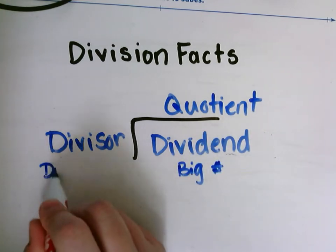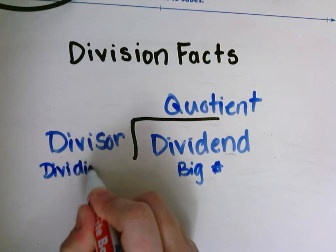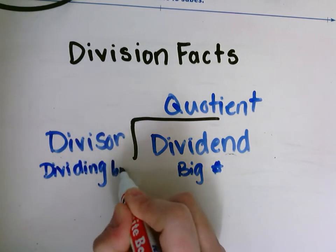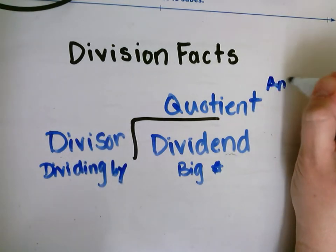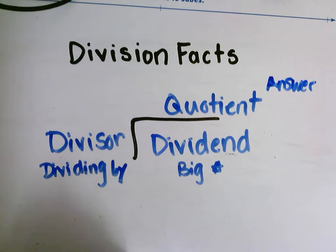And this is the number we are dividing by. Over here our divisor is the number we're dividing by and the quotient is our answer. And remember their quotient is going to be on top.